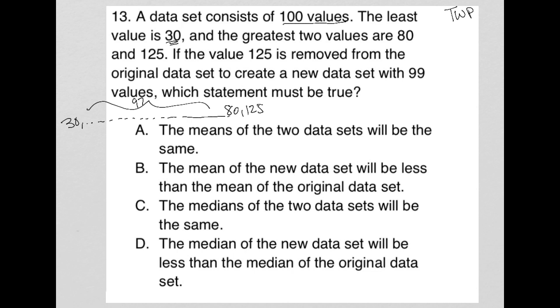If the value 125 is removed, okay, so cross that out, from the original data set to create a new data set with 99 values, which statement must be true? Okay.